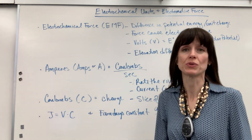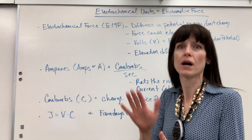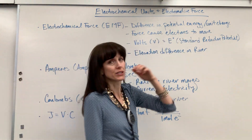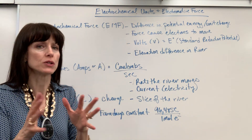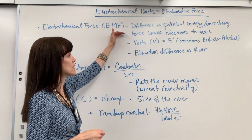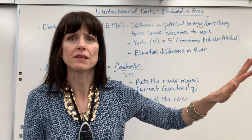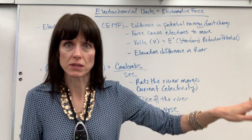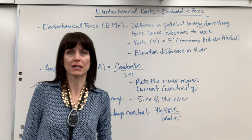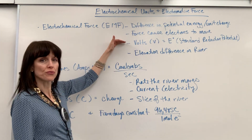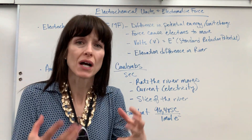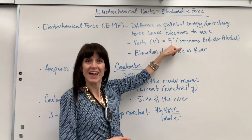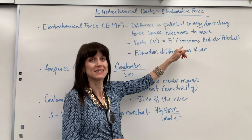First, we have what's called the electrochemical force, abbreviated EMF. This is what pushes electrons — it's a difference in potential energy per unit charge. It's the force that causes electrons to move, like the wind blows and it makes leaves move, or a car has gasoline that's combusted that makes the wheels turn. It's just a force that pushes electrons. And that force — the unit for that is volts. So whenever I use the word potential, I'm talking about voltage, about what pushes electrons. And remember, voltage — that's our E, the E-naught, the standard reduction potential.